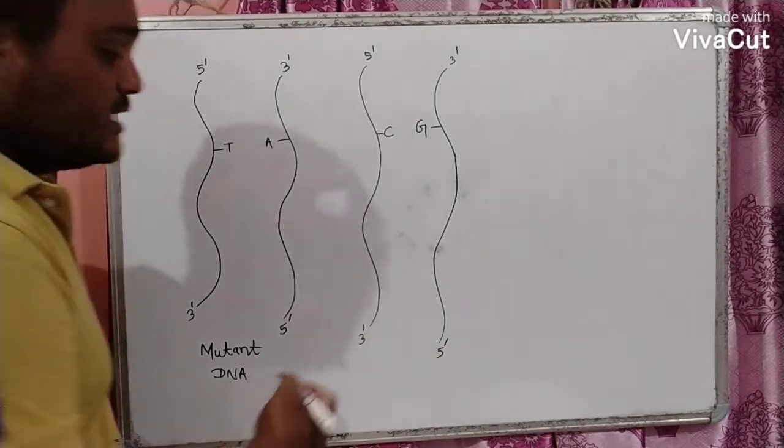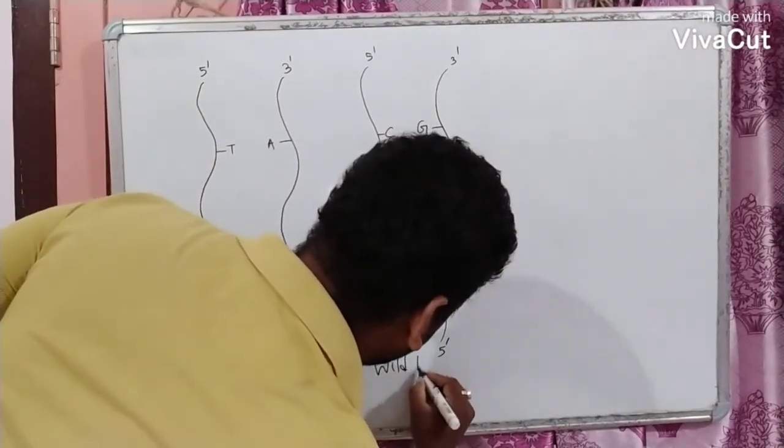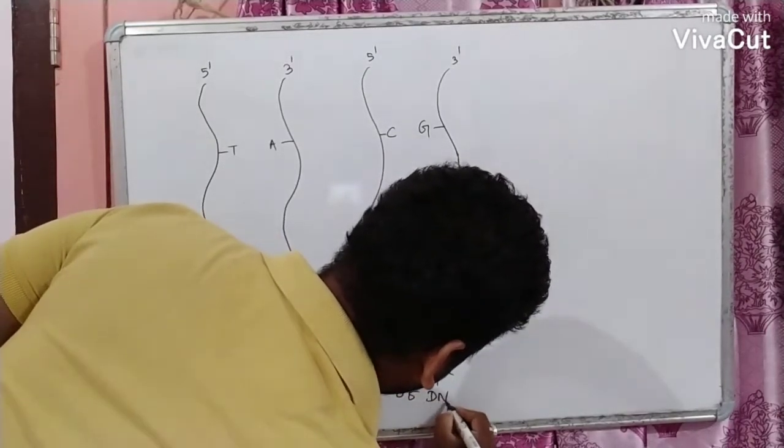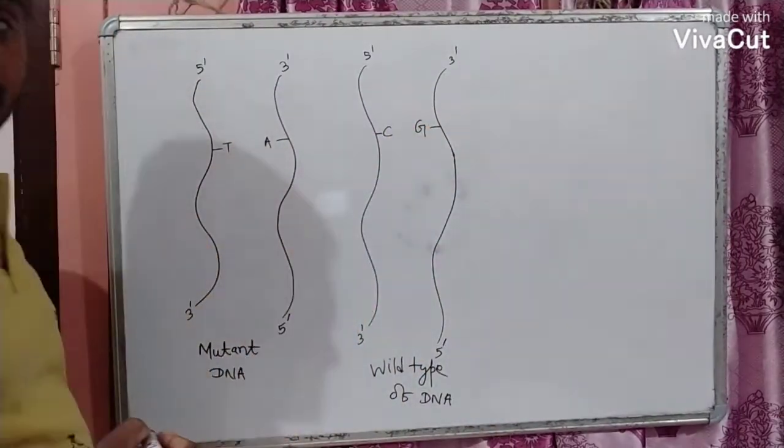And the second one is the wild type of DNA having the CG base pair.